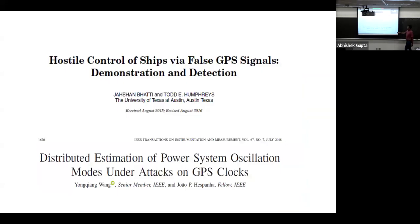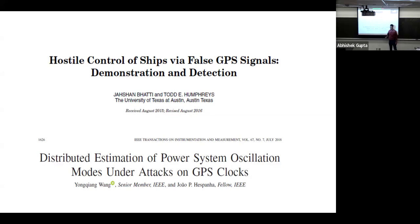There has also been control of ships via spoofed GPS signals — GPS signals are easy to spoof, as demonstrated by UT Austin researchers. In power systems, by attacking GPS clocks you can cause oscillations. These are attacks you can't see or feel — they happen at the background cyber layer while causing real-world consequences.